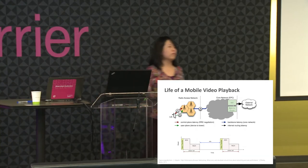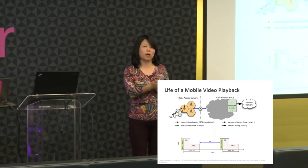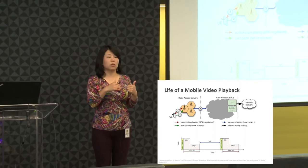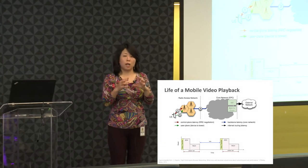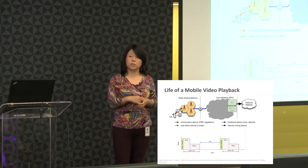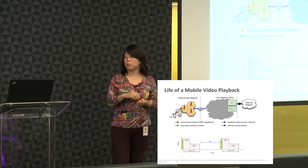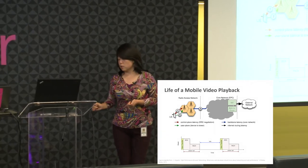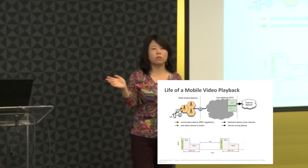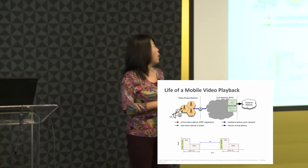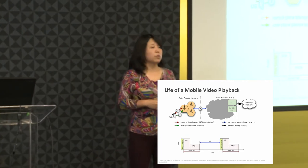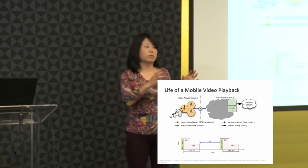When a UE requests YouTube video content, it first sends the request to the radio access network, which wakes the device from idle state to a high-power state. Because of limited device power and limited radio resources, we let the mobile device sleep as much as possible. When requesting video content, the device first wakes from idle to dedicated state, then the request passes through multiple core network nodes, including a NAT box — because we have limited IPv4 addresses — and the mobile proxy.